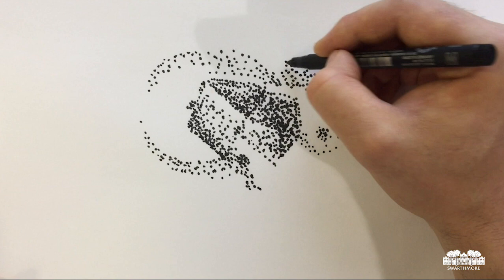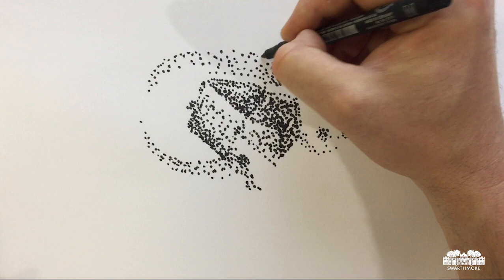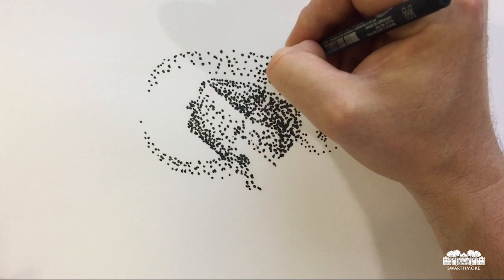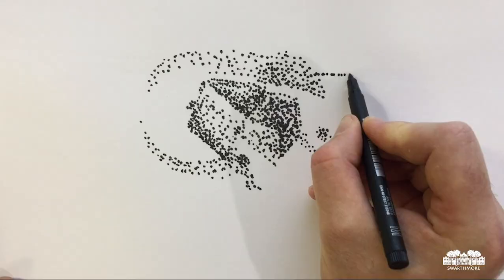So back to our dot drawing. An effective trick to help see value is to actually squint at the object you're looking at. Edwin Dickinson, who is a painter, used to refer to this as the profound squint. So by squinting, you're actually eliminating a lot of smaller information, more detailed information, and it allows you to see the true nature of your order of value, from light to dark, in whatever you're looking at.